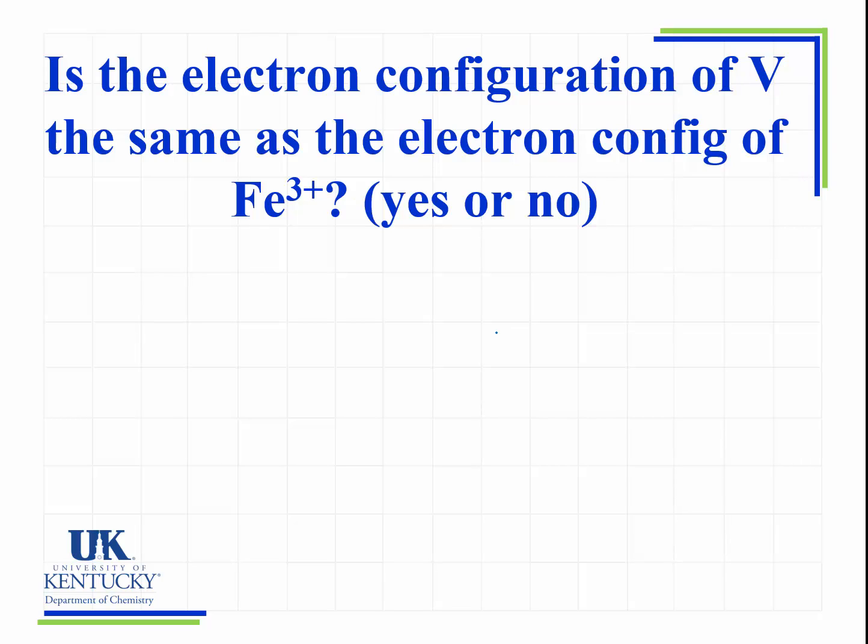Now, here's another question. Is the electron configuration of vanadium the same as the electron configuration of iron 3 plus? In other words, are these isoelectronic? And you're just going to answer yes or no. Well, it is a bit tricky. They do have the same number of electrons, but they do not have the same electron configuration.